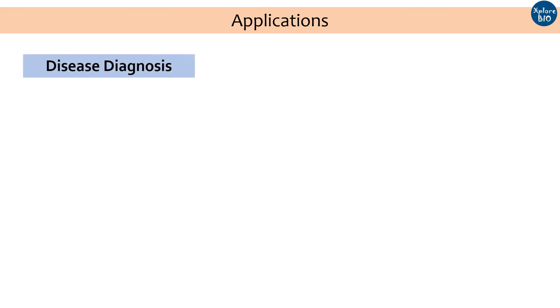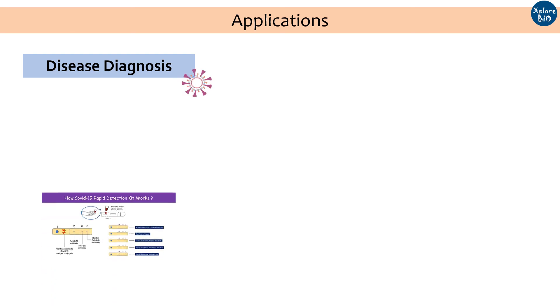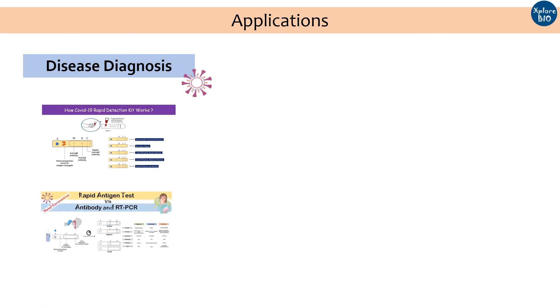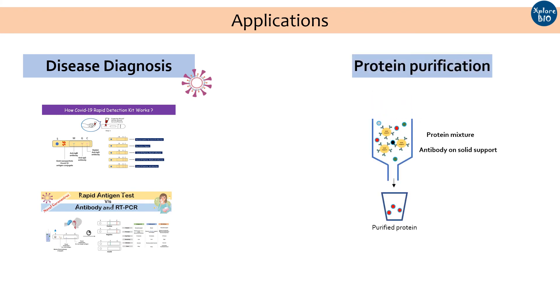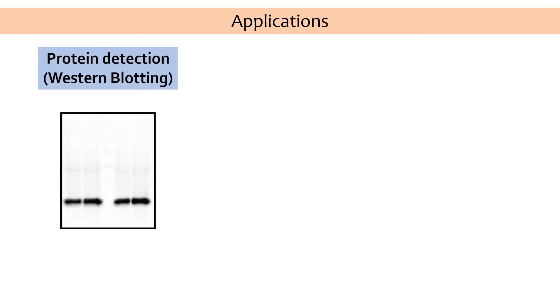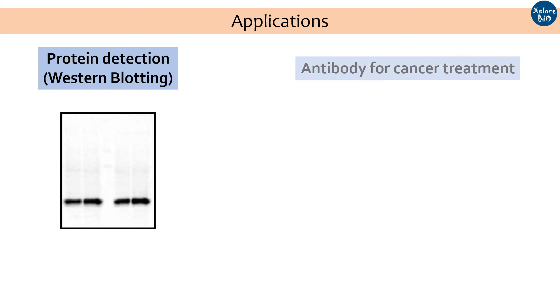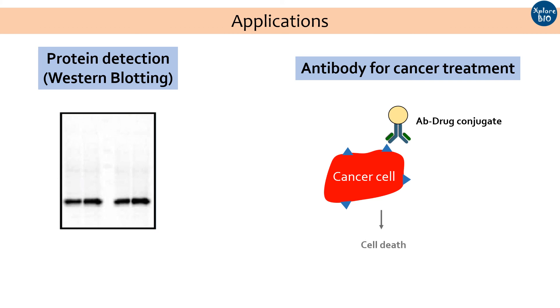Now let's talk about some major applications of monoclonal antibodies. Number one is disease diagnosis using ELISA — for example, novel coronavirus detection. Other applications include protein capture and purification for structural or functional analysis, western blotting for detection and quantification of a specific protein or compound in a sample, and antibody-based drug targeting, where a cytotoxic agent may be attached to an antibody against cancerous cells and used for treating cancer. There are many such applications of monoclonal antibodies.